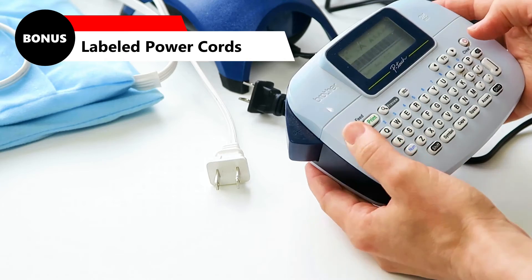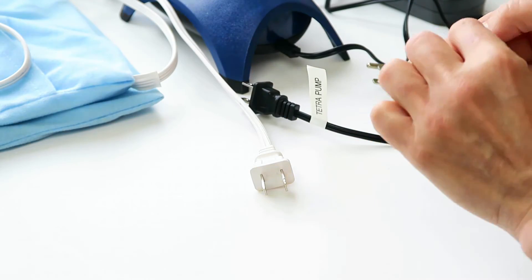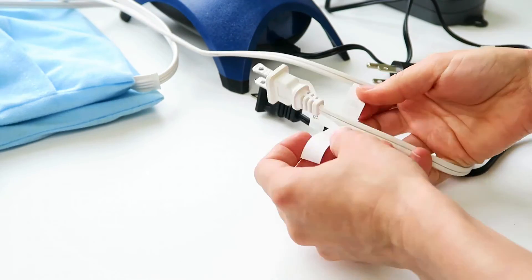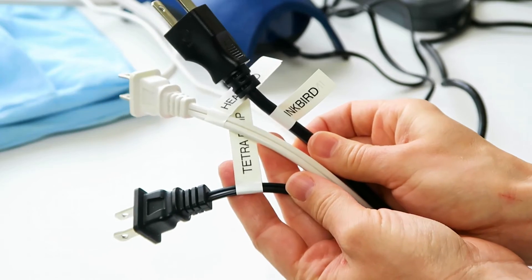Bonus tip: Label your power cords. With vacuum pumps, heaters, lights, and tools all in the same area, having a label right there at the plug end makes it easy to double check that you're plugging in the correct device.